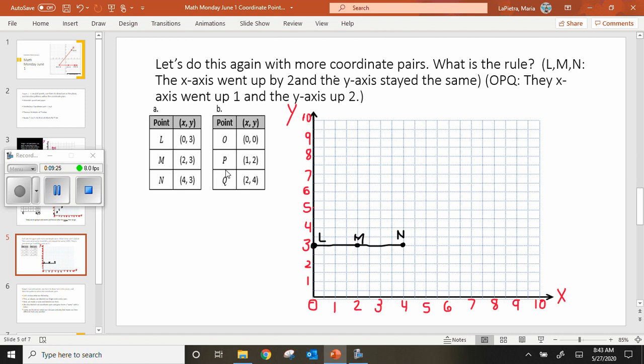Let's try points O, P, and Q. Now again, we have our X and our Y. We've got (0, 0). That, again, is our origin. I plot that point and I name it O. My next one is one over, up two. That's going to be P. My next one is two, up to four. I'm going to label that Q.